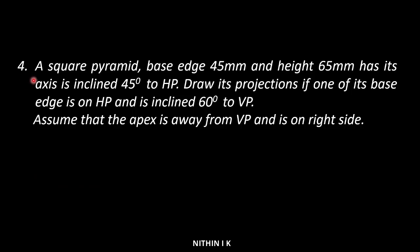Problem number 4: a square pyramid with base edge 45 mm and height 65 mm. Its axis is inclined 45 degrees to HP. Draw its projection if one of its base edges is on HP and is inclined 60 degrees to VP. Assume that the apex is away from VP and is on the right side.